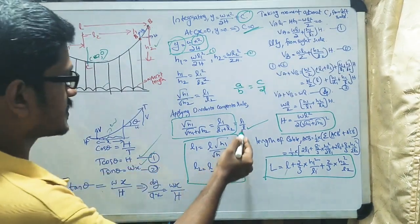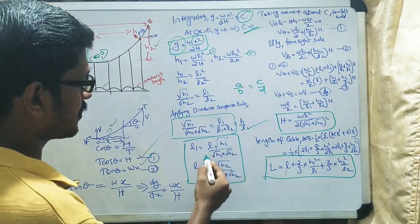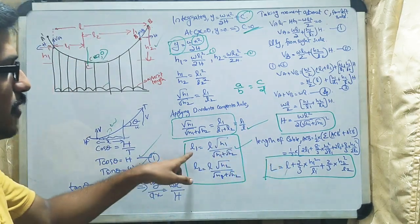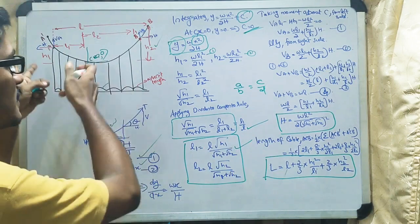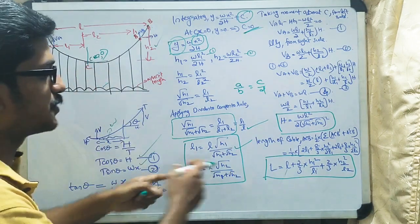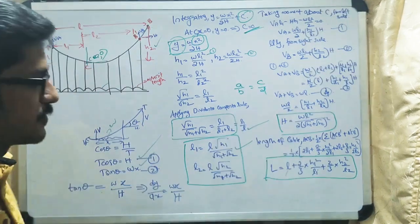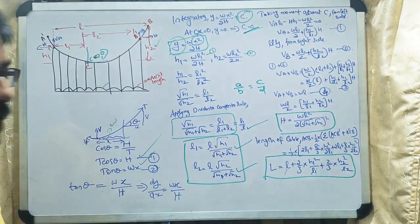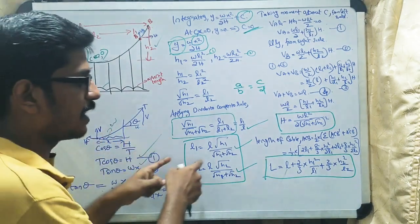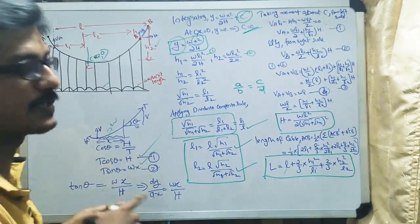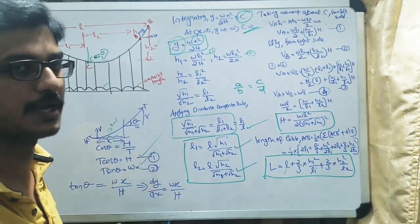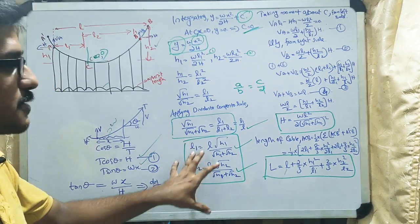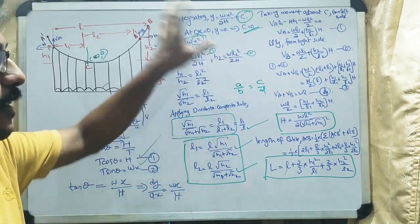From this we can write down directly that l1 = L·√h1/(√h1 + √h2) and l2 = L·√h2/(√h1 + √h2). These two equations are very important — they show how l1 and l2 are related to h1 and h2. Please note these equations carefully.